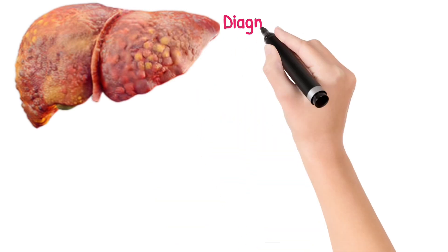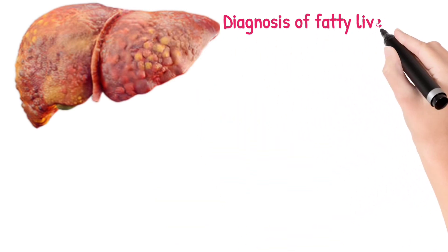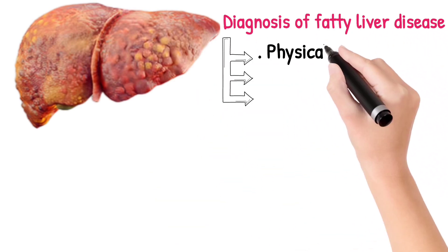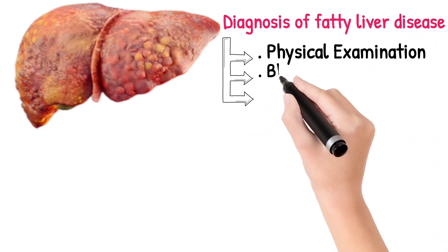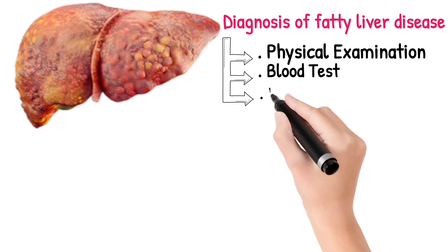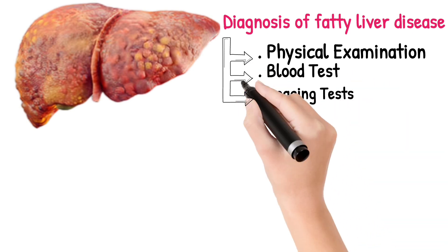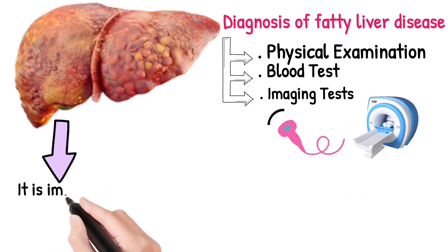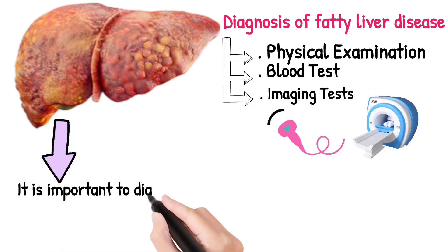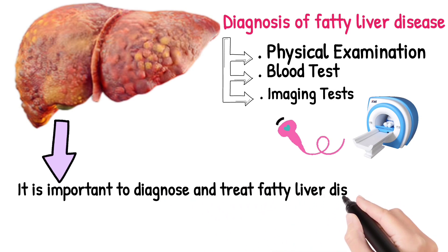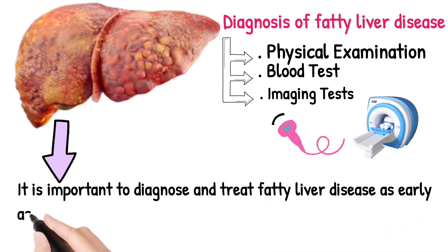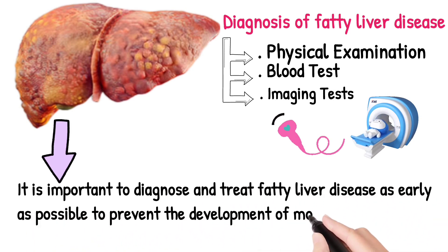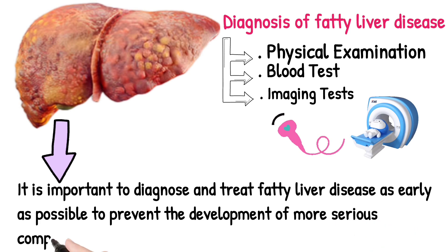Diagnosis of fatty liver disease is typically made through a combination of physical examination, blood tests, and imaging tests such as ultrasound or CT scan. It is important to diagnose and treat fatty liver disease as early as possible to prevent the development of more serious complications.